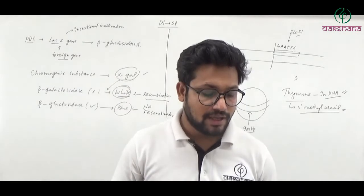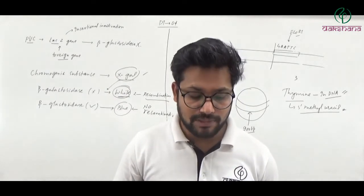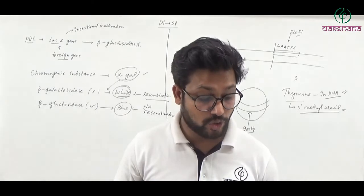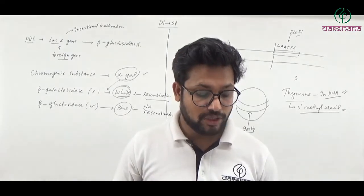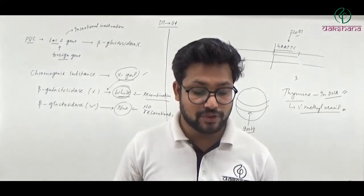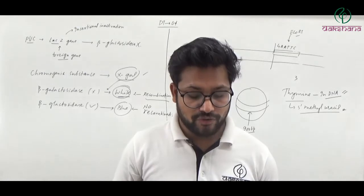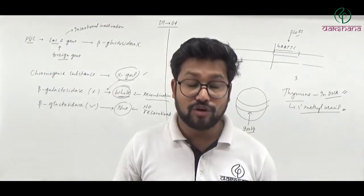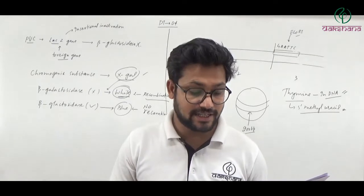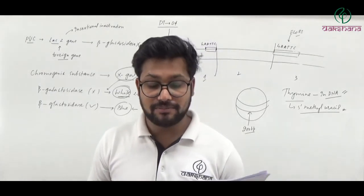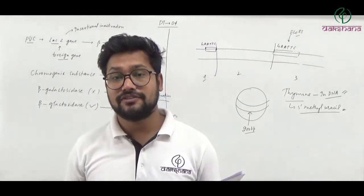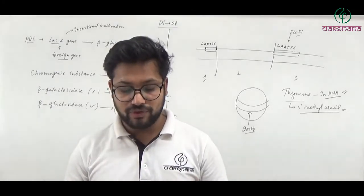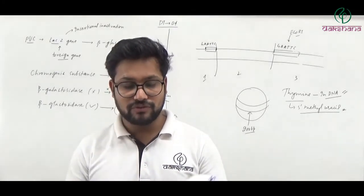Question number forty: An individual with two identical members of a pair of genetic factors is called homozygous. Two identical members of a pair of genetic factors means homozygous condition. Question number forty's fourth option is the right answer.